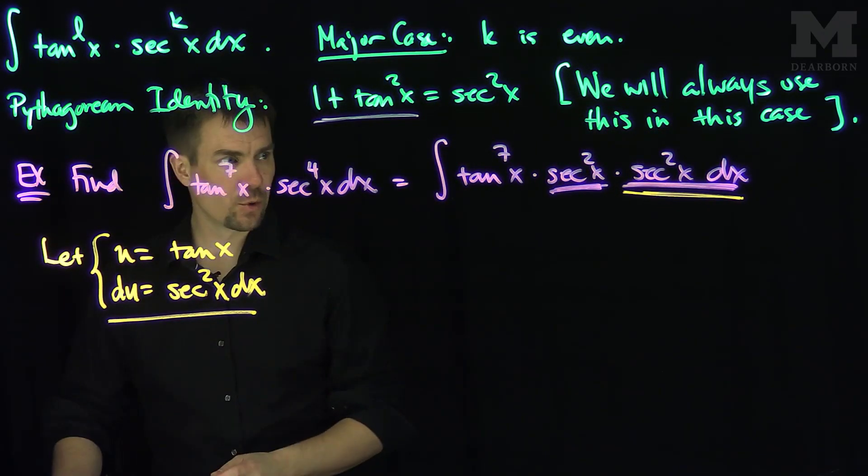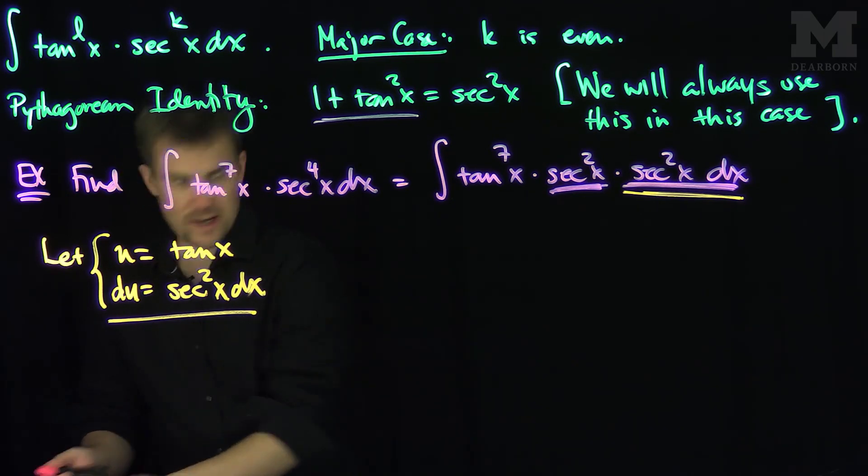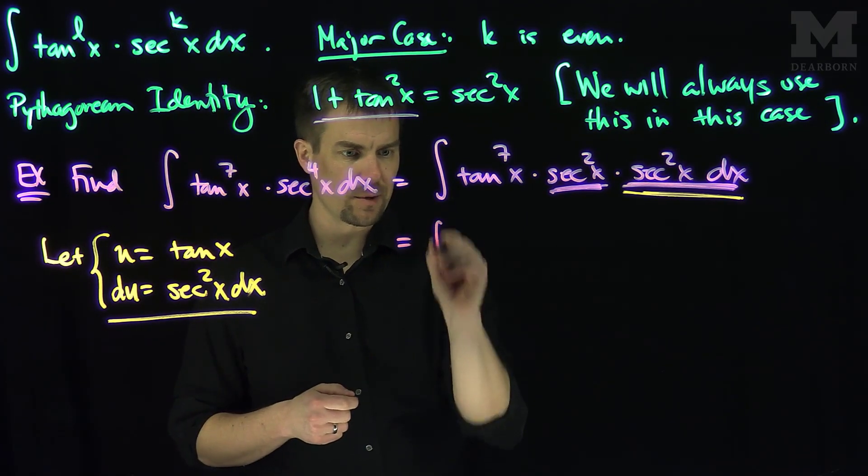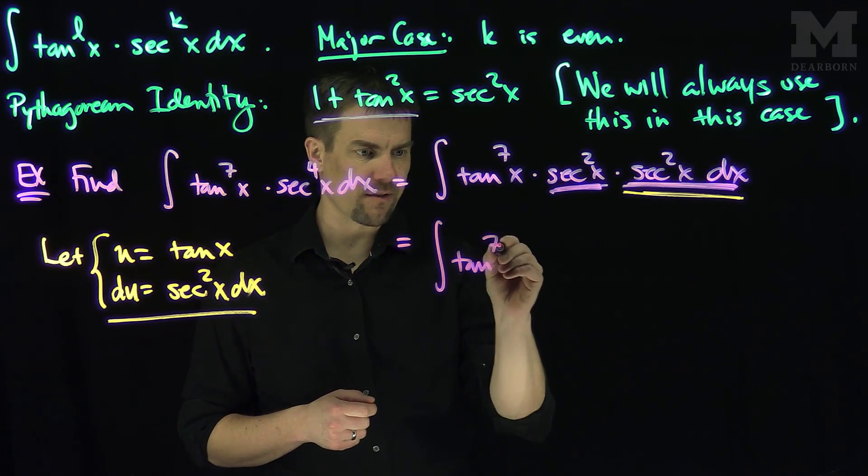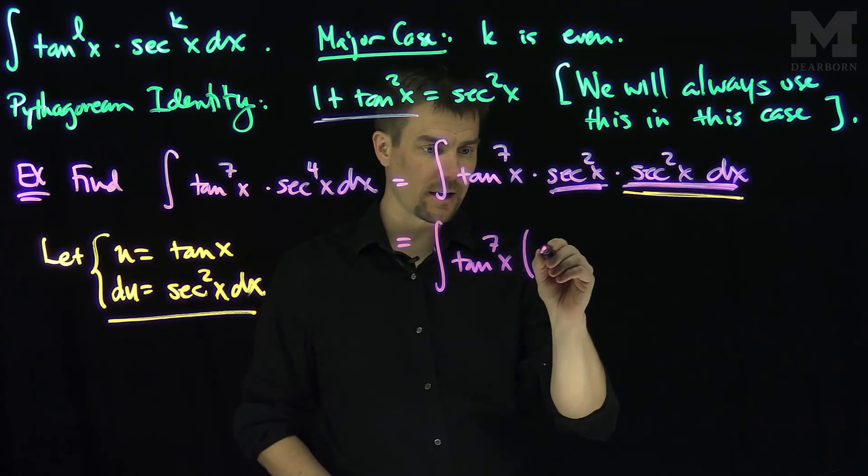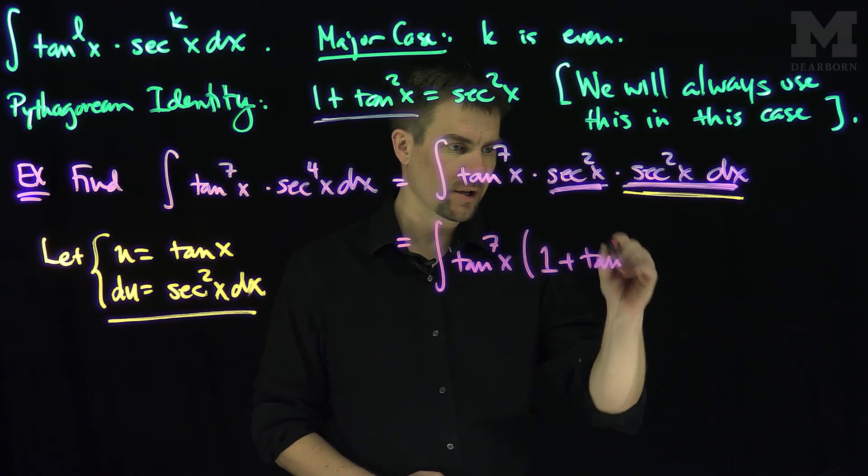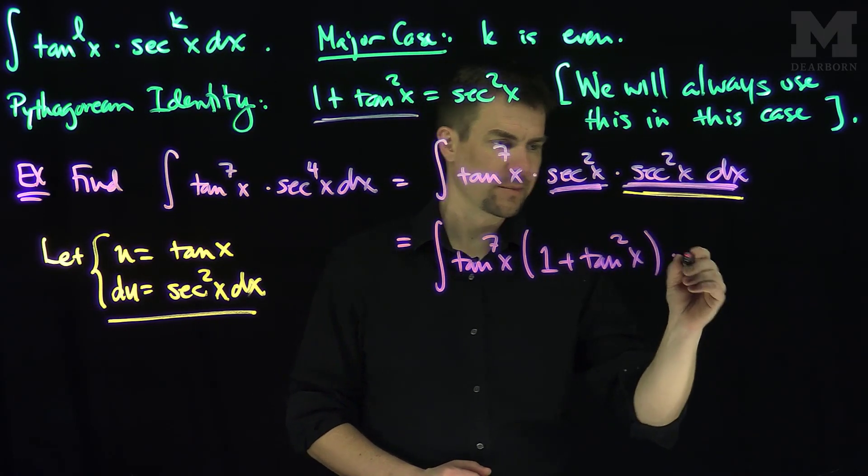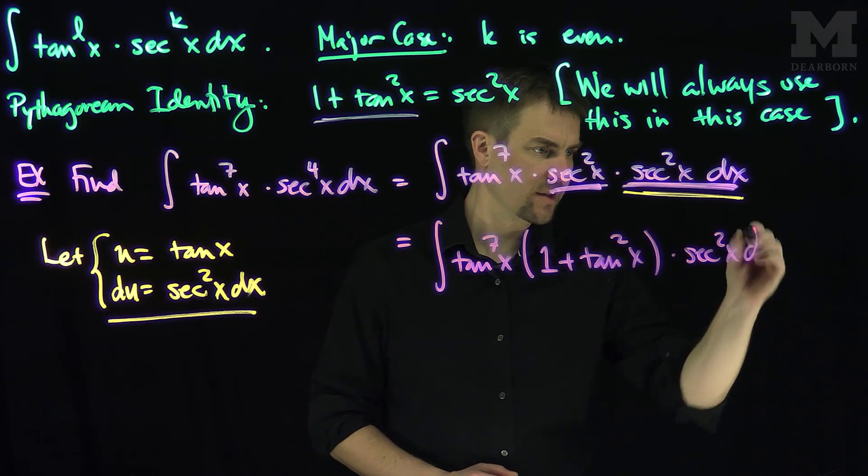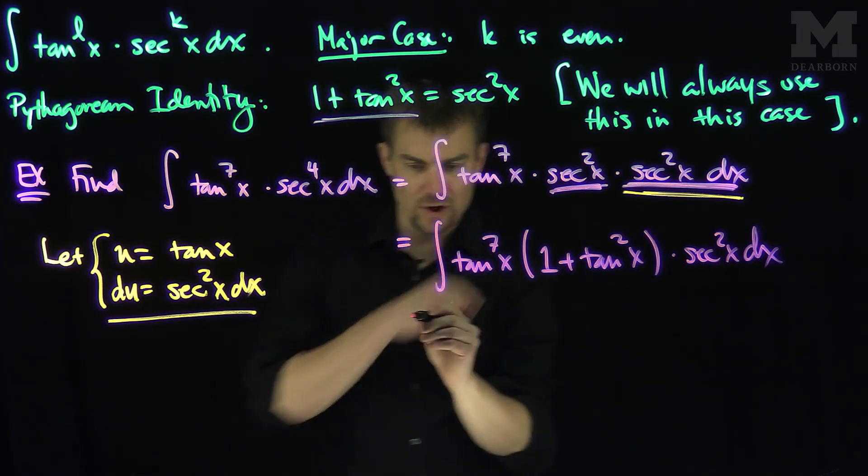So now let's continue and substitute what secant squared is. This is going to be the integral of tangent to the seventh of x. Now secant squared by my Pythagorean identity is 1 plus tangent squared of x times secant squared of x dx. Now we're in exact position for our substitution.